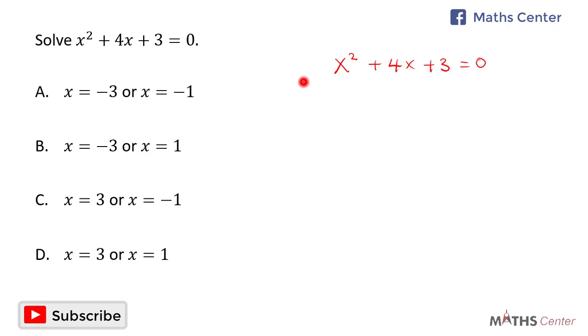To factorize this, we use the coefficient of x squared to multiply the constant. The coefficient of x squared is 1 and the constant is 3. 1 times 3 gives us 3. So we're looking for two numbers that when you multiply you get 3, but when you add you get 4.